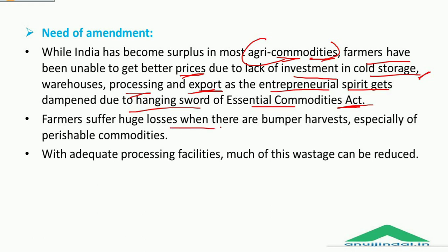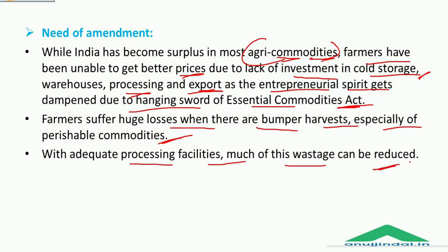Farmers suffer huge losses when there are bumper harvests, especially of perishable commodities. If proper infrastructure for warehouses, processing and cold storage is lacking, the entire produce ends up converting into losses. With adequate processing facilities, much of this wastage can be reduced.